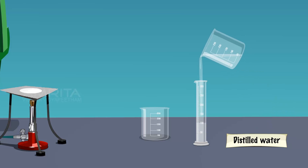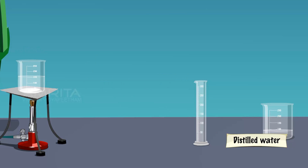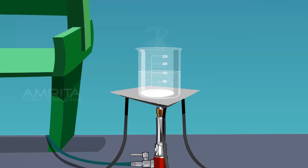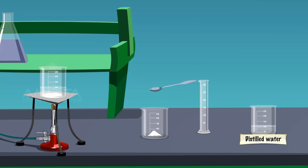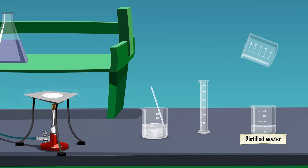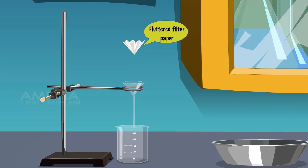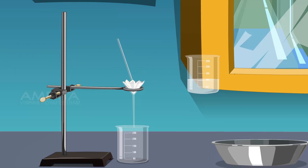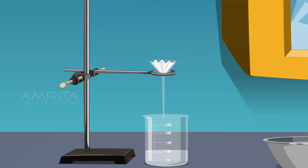Take 150 ml of distilled water in the measuring cylinder and pour it into a clean 250 ml beaker. Boil the water by placing the beaker over the Bunsen burner. Take another beaker and put some crude sample of benzoic acid into it using the spatula. Add gradually with stirring the minimum quantity of boiling water just sufficient to dissolve the benzoic acid. Fix the funnel to the stand; the stem of the funnel should touch the wall of the beaker to avoid splashing. Place the filter paper in the funnel, pour the solution through the glass rod, and collect the filtrate. The insoluble impurities are left behind on the filter paper.